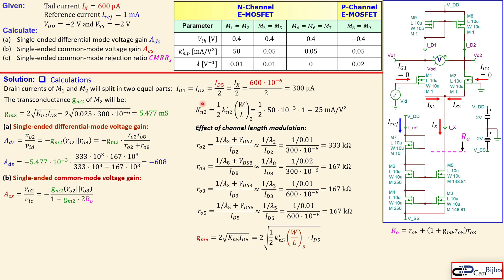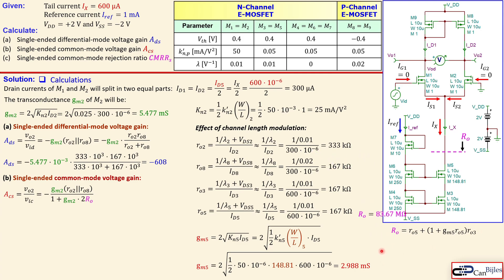gm5 = sqrt(2 · k_n5 · ID5), where k_n5 = (1/2) · k_n5_prime · (W/L)5. The W/L ratio is 148.81 and k_n5 prime = 50 µA/V². With ID5 = Ix = 600 µA, the calculation gives gm5 = 2.988 mS. We now have all necessary parameters to compute Ro.